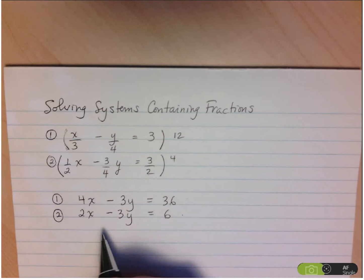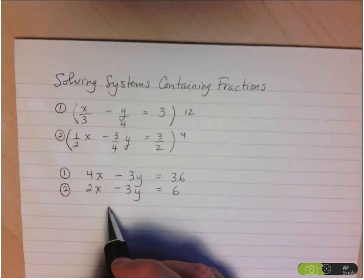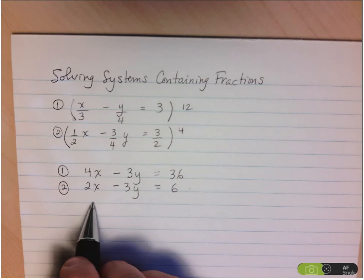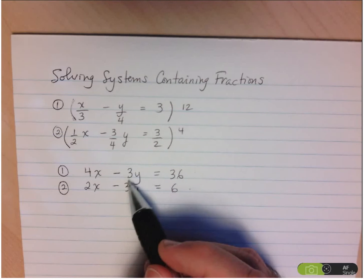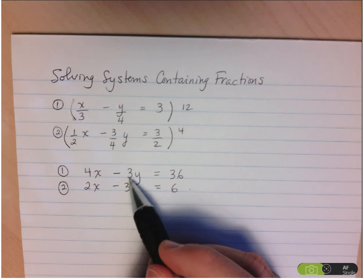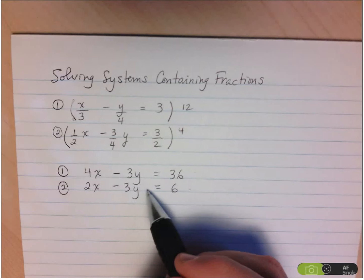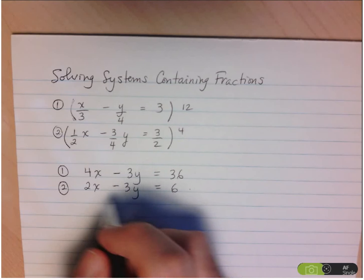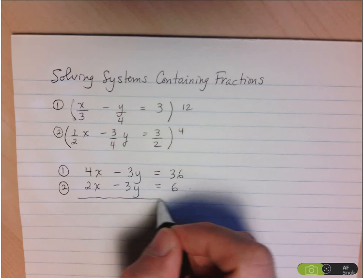And now what I have is a much easier system of equations to deal with. Now, this actually turned out to be quite a nice system of equations because I have the same coefficient in front of the y's. So since I already have the same coefficient, I just have to decide, am I going to add or subtract the two equations? And since the signs are the same, I'm going to subtract the equations.